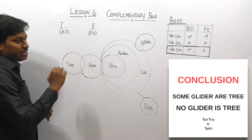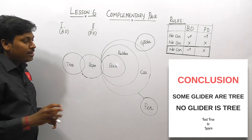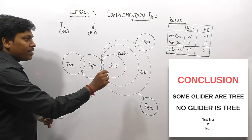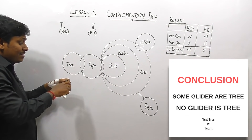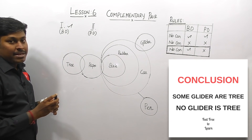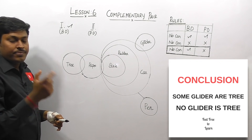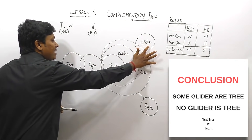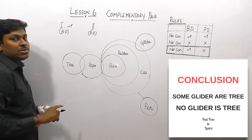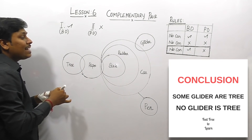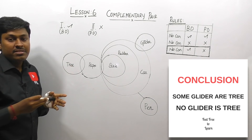Question number three: conclusion one is 'Some gliders are tree' and conclusion two is 'No glider is tree'. The conclusion looks like a complementary pair, so concentrate only on the 'No' conclusion. According to the basic diagram there is no connection between tree and glider, so the conclusion is true. In the possible diagram, as taught in lesson two, if all parameters are inside a single Venn diagram, the 'No' conclusion is always false in the possible diagram. Tree, paper, scale, rubber, car, and glider are all inside a single Venn diagram, so the 'No' conclusion is false in the possible diagram.